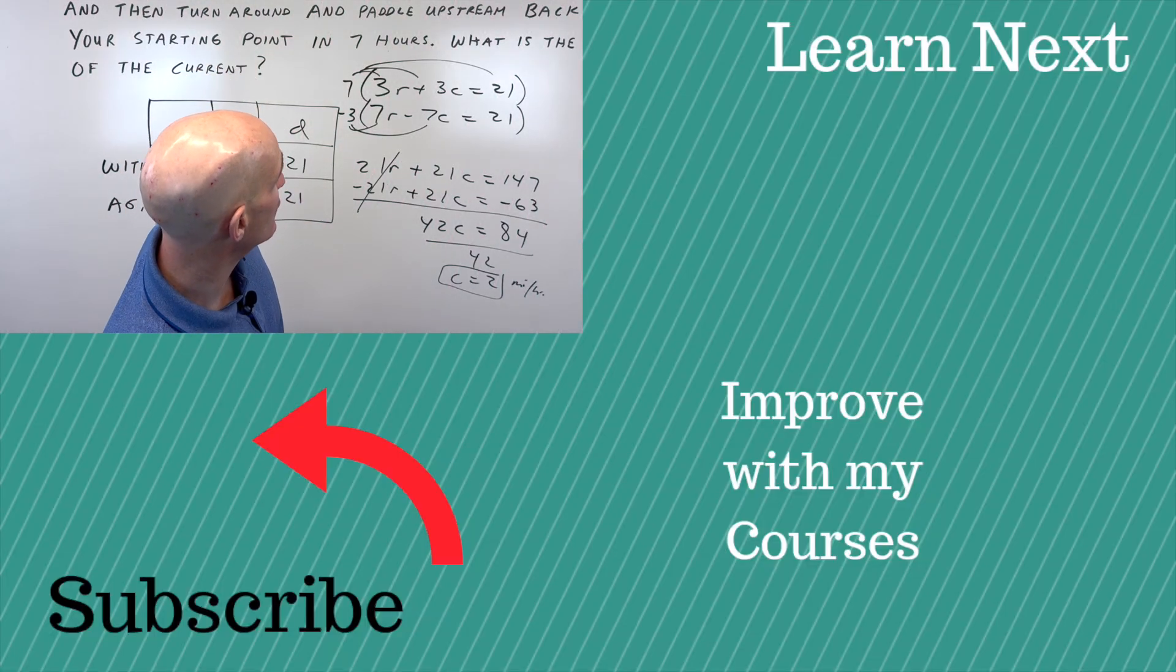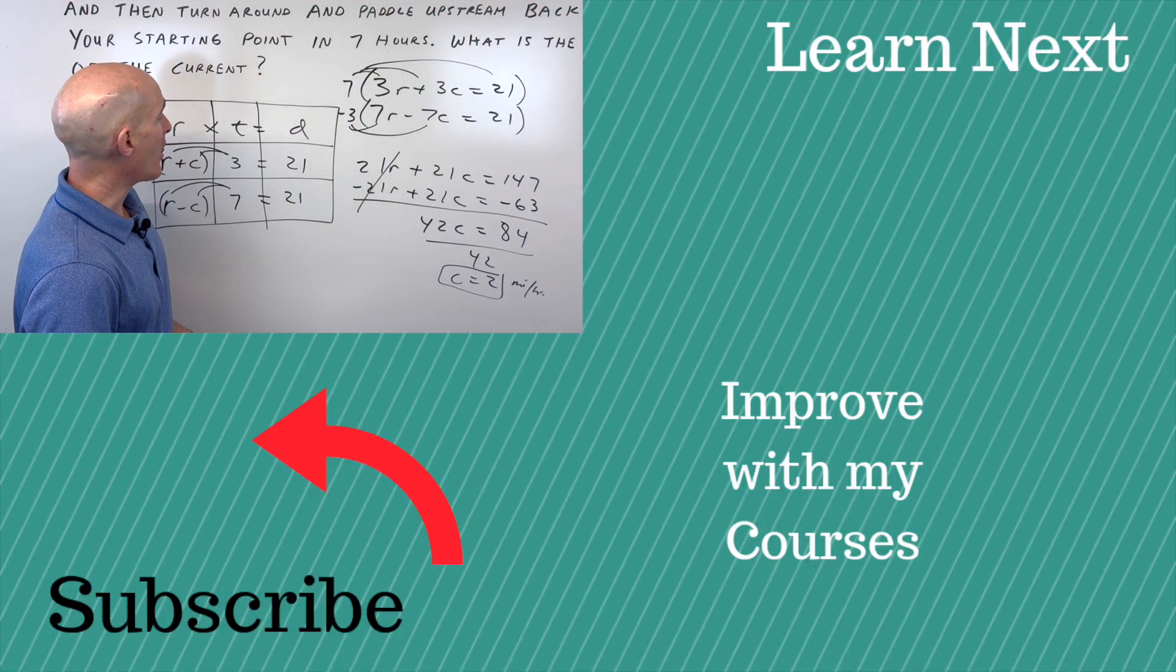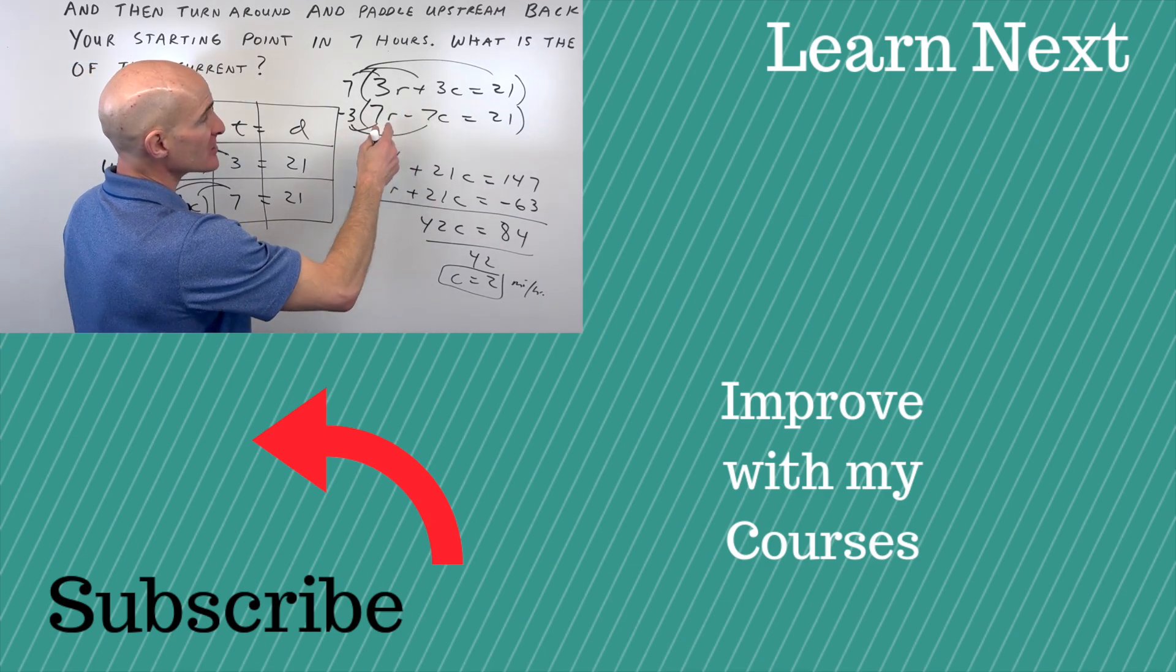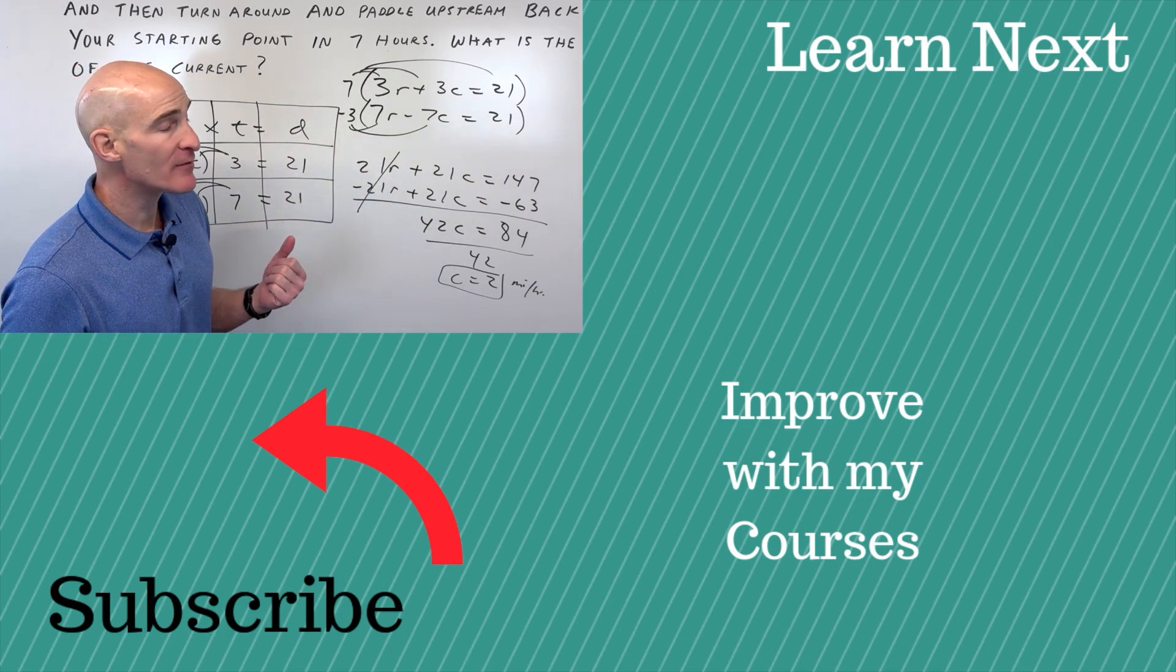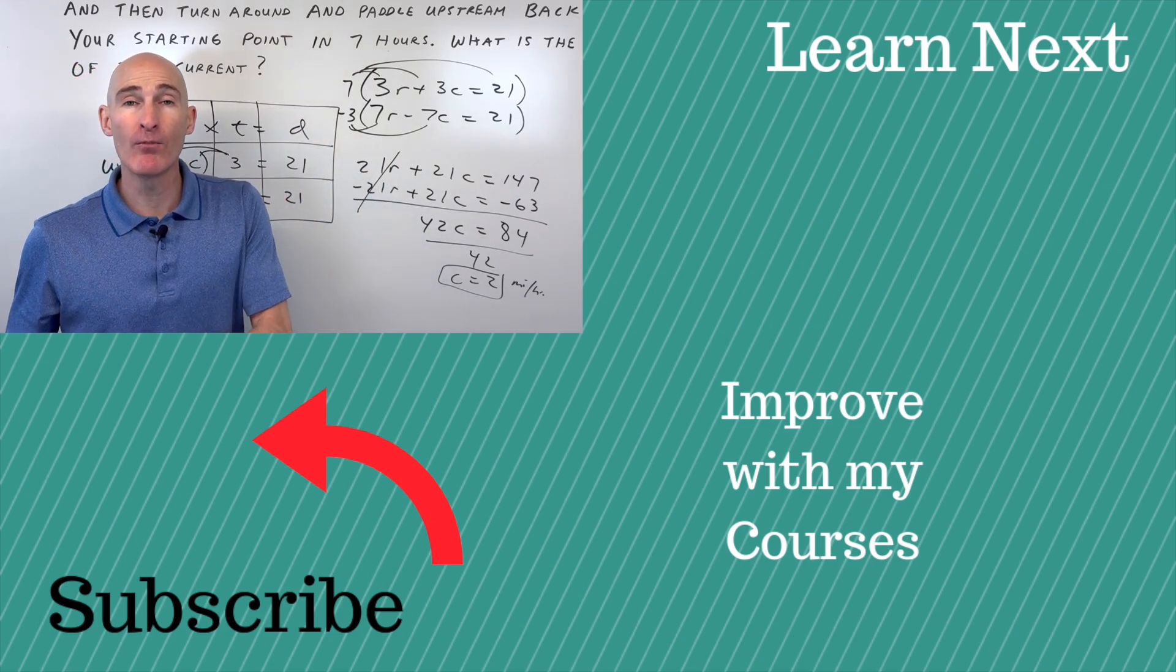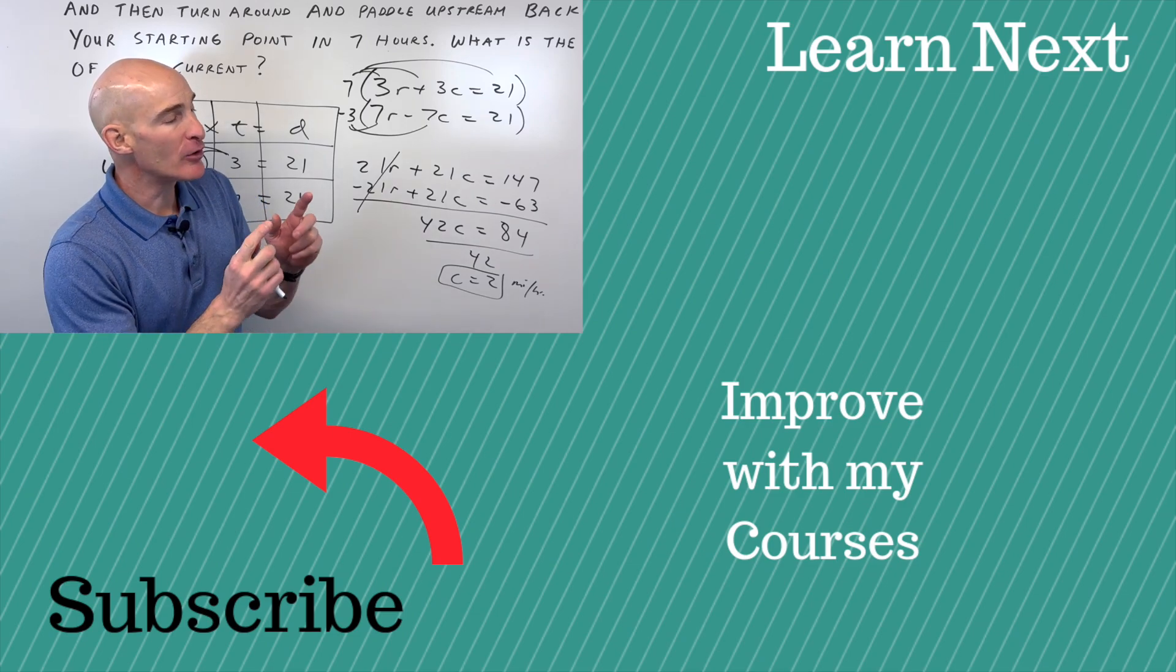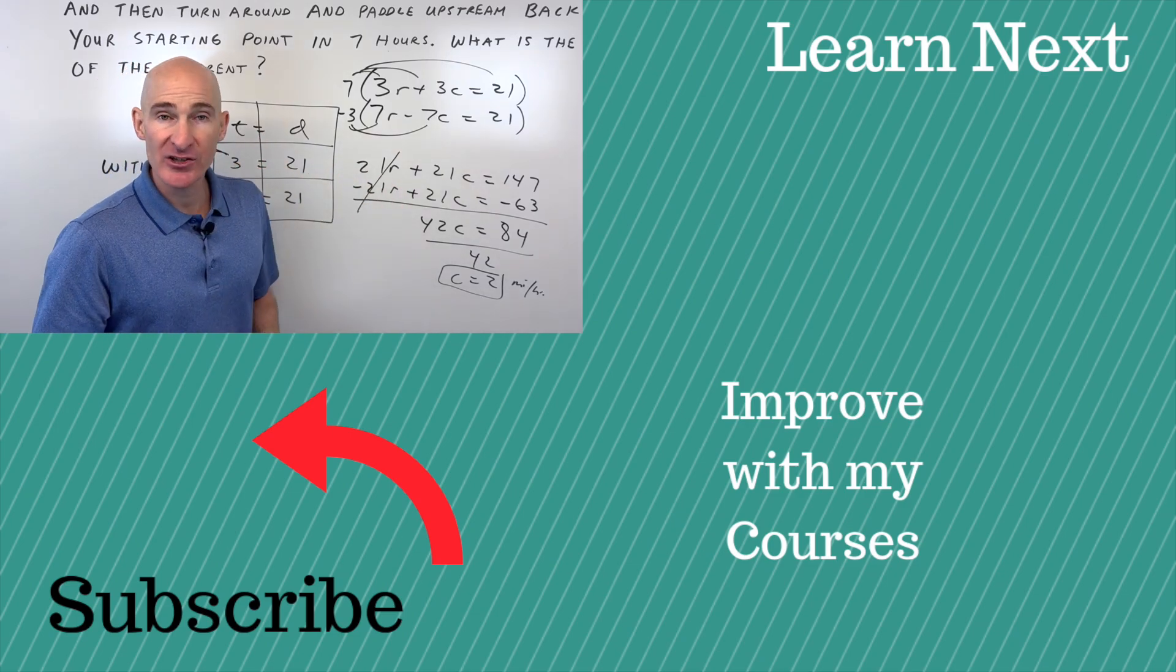Now if we wanted to find the speed of the boat, we can solve for R by plugging that back in and solving for the rate of the boat in still water. So great job if you're able to follow this system of equation story problem. If you want to see more examples like these, I'll put a video right there so you can test yourself, practice, and I'll see you in that video.